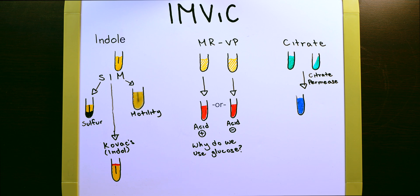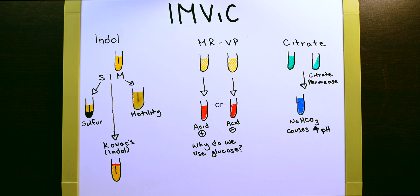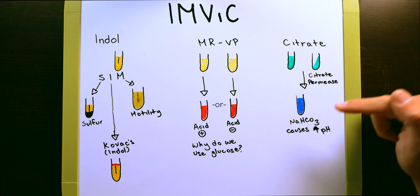What citrate permease does is it brings citrate into the cell of the bacteria and allows it to use it as a carbon source for things like the Krebs cycle. Now, the way that we know that this actually happened is because during that process, the bacteria creates something called sodium bicarbonate. Essentially CO2 reacts with water to make sodium bicarbonate. That sodium bicarbonate causes an increase in pH.